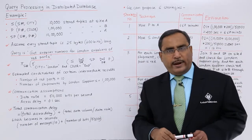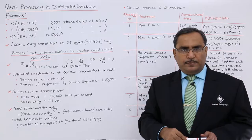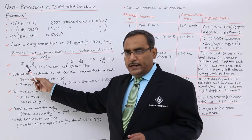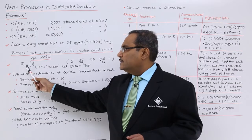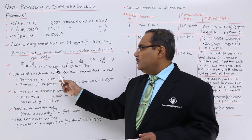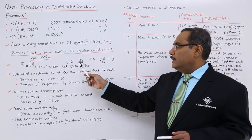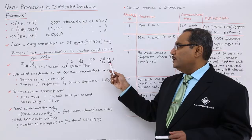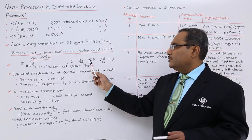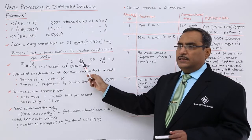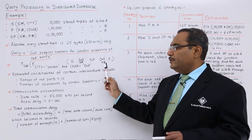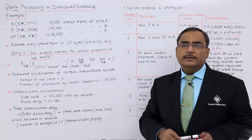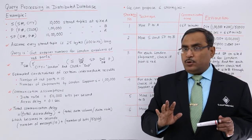If we write this query in relational algebraic form, it will be: π(S#) σ(city='London' AND color='red') (S ⋈ SP ⋈ P), where the first natural join between S and SP takes place on S# (supplier number), and the second natural join between SP and P takes place on P# (part number).